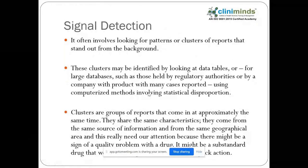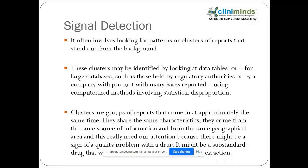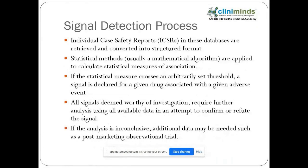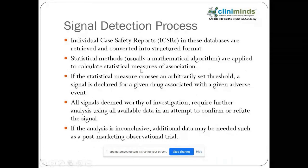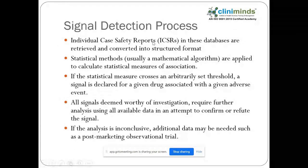How do we detect a signal? Signal detection can come from many sources. There can be a cluster of cases from a particular area, a literature report, or multiple sources of signal detection. For example, signal detection mainly comes from ICSRs.